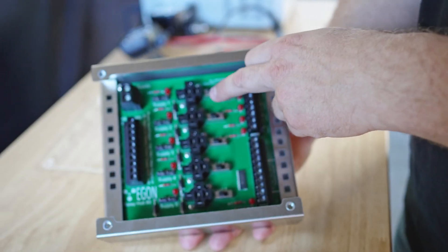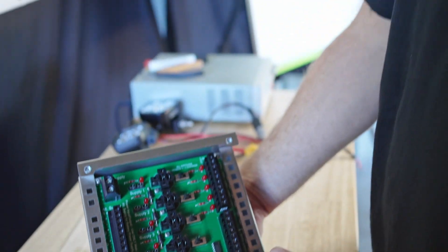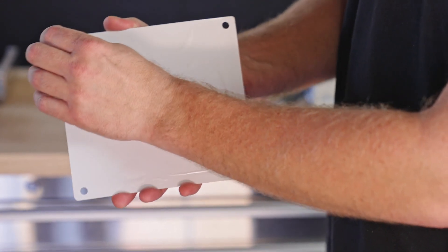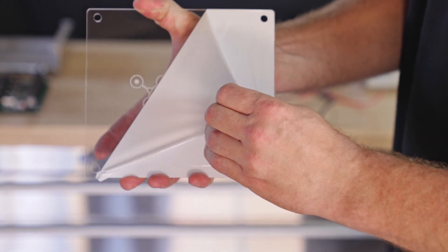Once you put all the screws in this should look exactly like this. And my favorite part of every Egan installation is peeling off the wrapper of the cover.